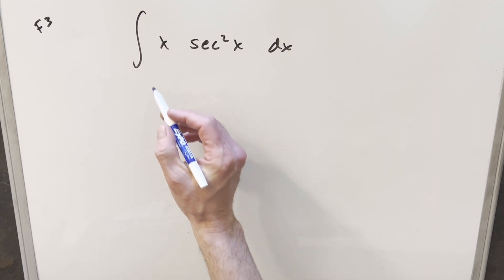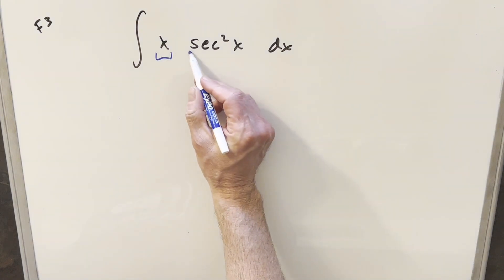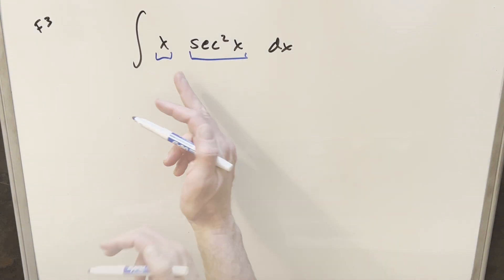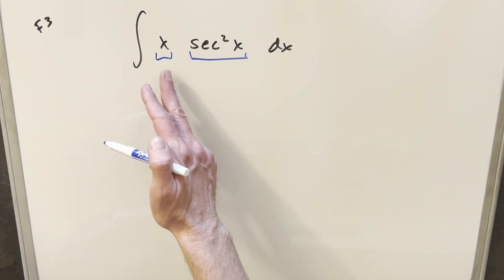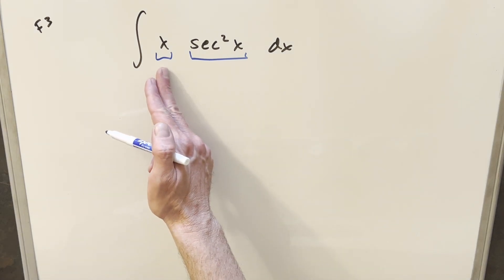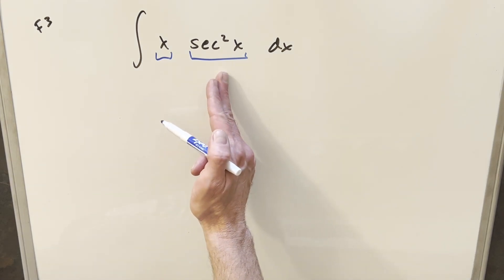An interesting thing here is we have x and we have a trig function, secant squared x, and actually this is a really good setup for integration by parts. We have two things. This one is nice to differentiate, and this one's going to be easy to integrate.